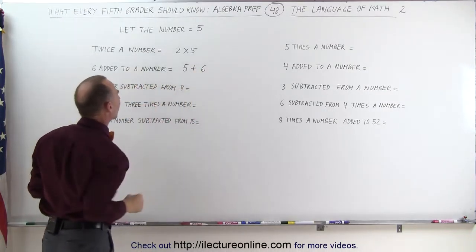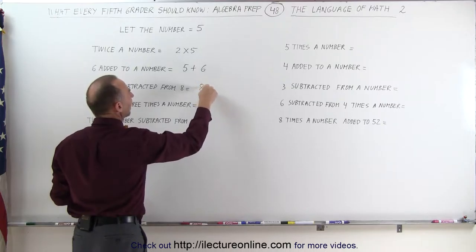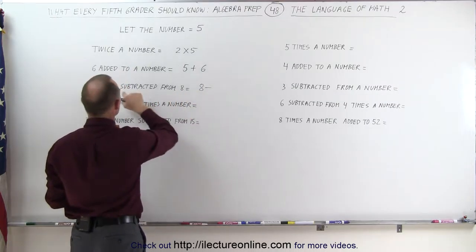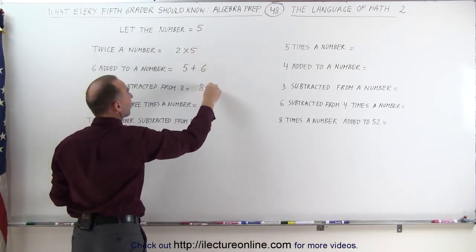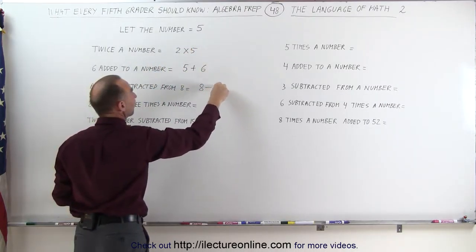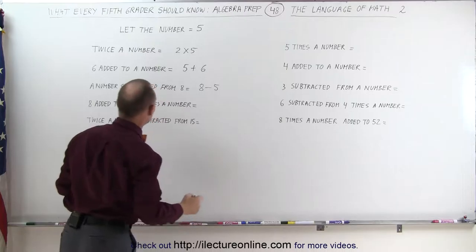A number subtracted from 8 means we put the number 8 down and then we subtract the number from that. If our number is 5, we subtract 5 from 8.